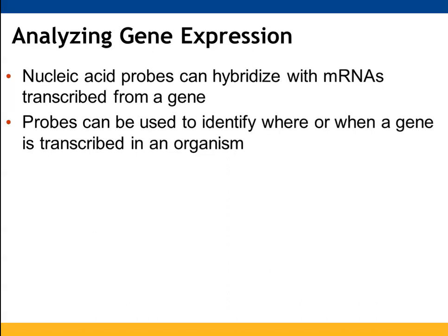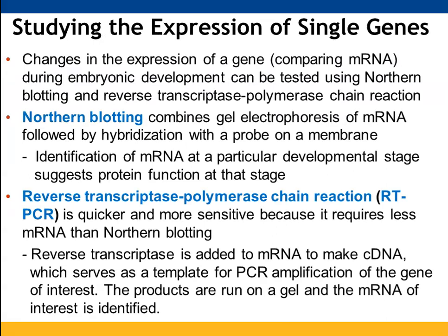Nucleic acid probes can also hybridize with mRNA, allowing us to look at where genes are being transcribed and used in an organism. To examine single genes and their mRNA component, we use Northern blotting — running mRNA samples on gel electrophoresis, then probing with the nucleic acid of interest on a membrane. Depending on where these mRNA fragments are found and in what tissues, we get a better idea of when this protein is needed in the developmental process.